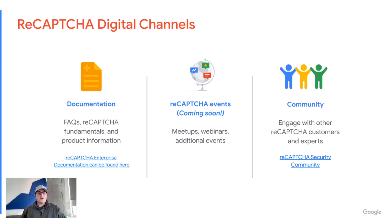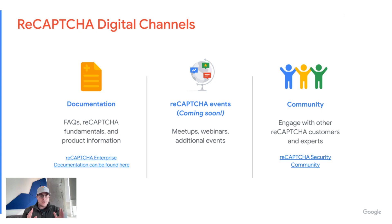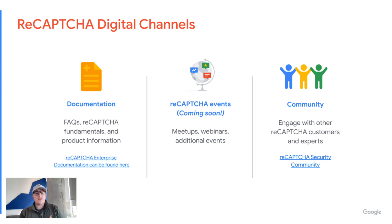We've got three main pillars I want to touch on. That first area is going to be our documentation. This is where you can find frequently asked questions, any ReCAPTCHA fundamentals you're looking for, or just generic product information. We've poured tens of thousands of hours into making sure this documentation is comprehensive and meets the needs of you, the customer. If you aren't sure where to start, I highly recommend starting in the documentation first, because chances are 90% of your questions are likely answered there.